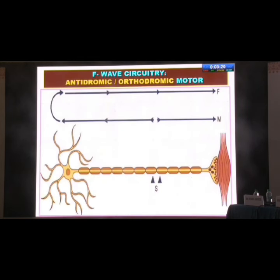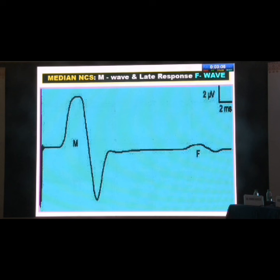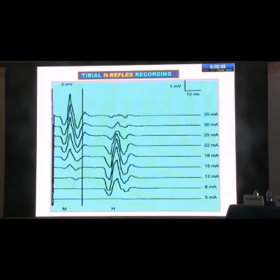F waves can also be studied. When you stimulate directly, you get an M response from the muscle, but the impulse also travels backwards and returns to stimulate the muscle again, giving two waves: M and F. F wave impairment indicates a proximal lesion at the root level. H reflex is similar to F wave, but it is studied mainly in the lower limb and the dorsal root is also involved in its pathway.